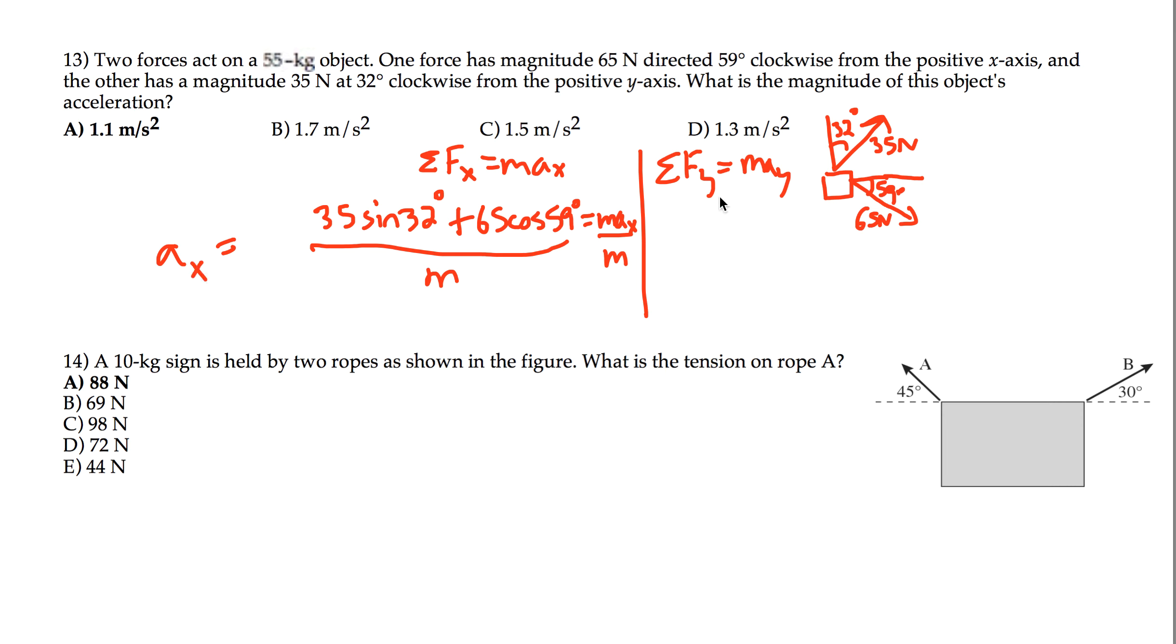And then do the same thing for the y-direction. This 35 newton force has an upward component which is adjacent to the 32 angle, so 35 cosine of 32.